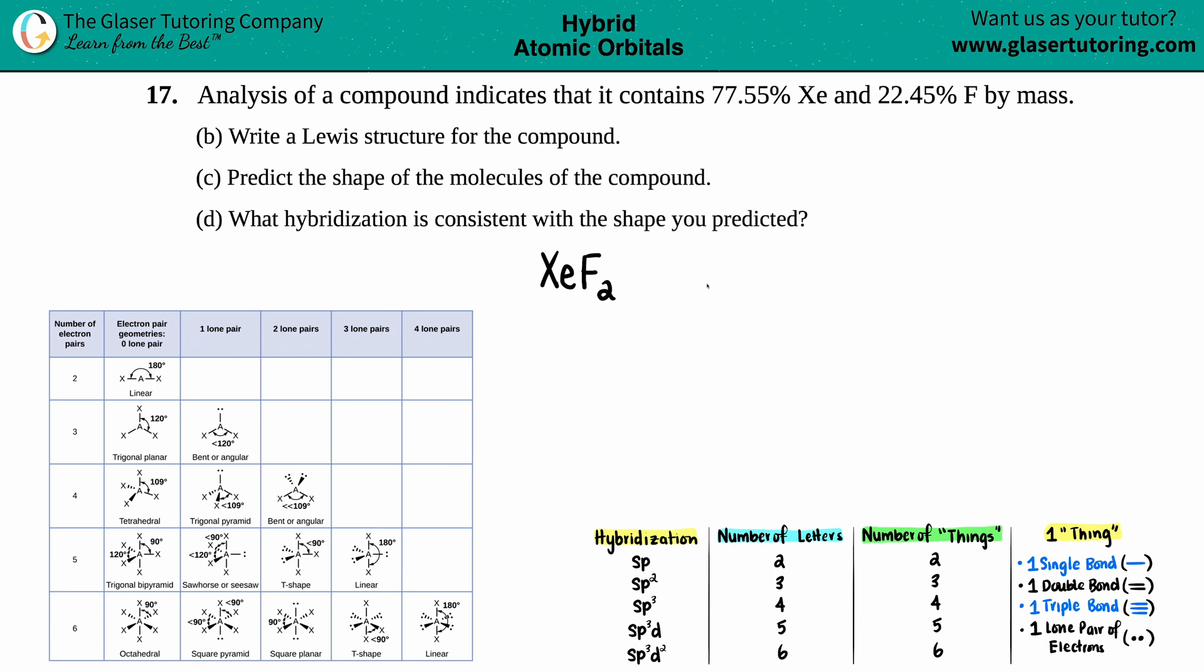Number 17. Analysis of a compound indicates that it contains 77.55% xenon and 22.45% fluorine by mass. And then we have to do B, C, and D for this video. So let's start on B.